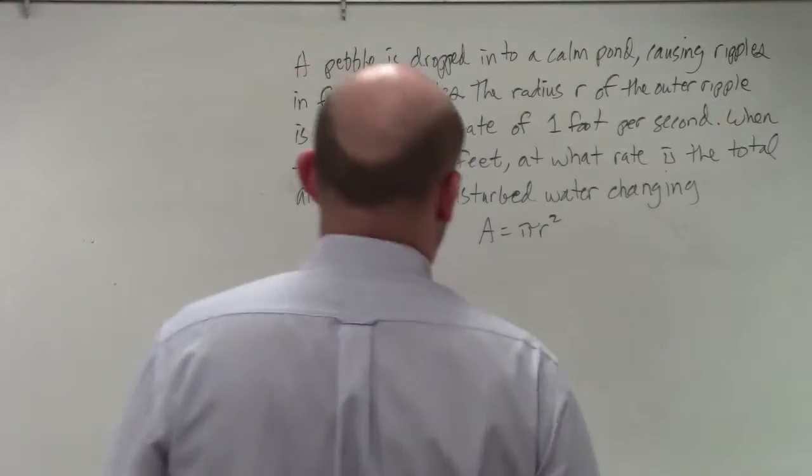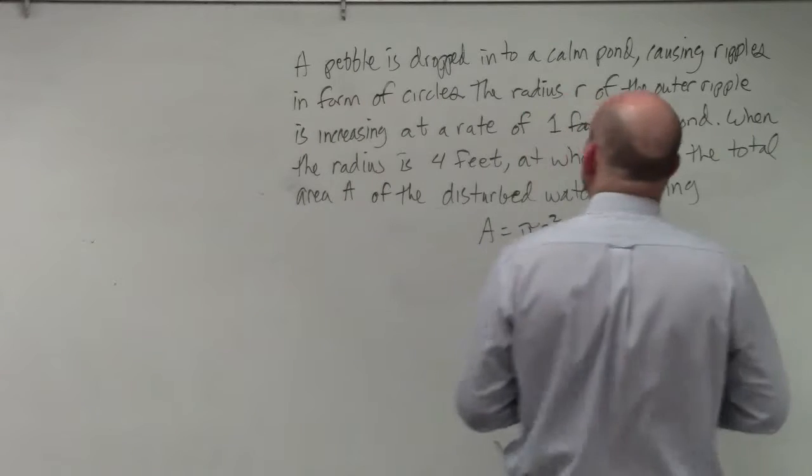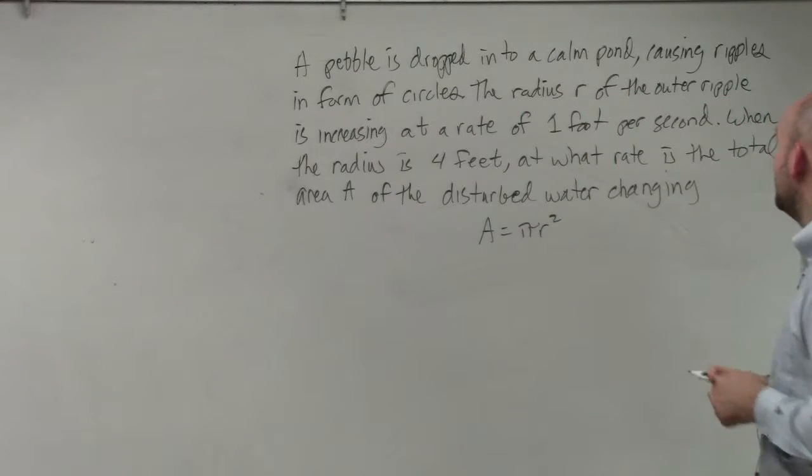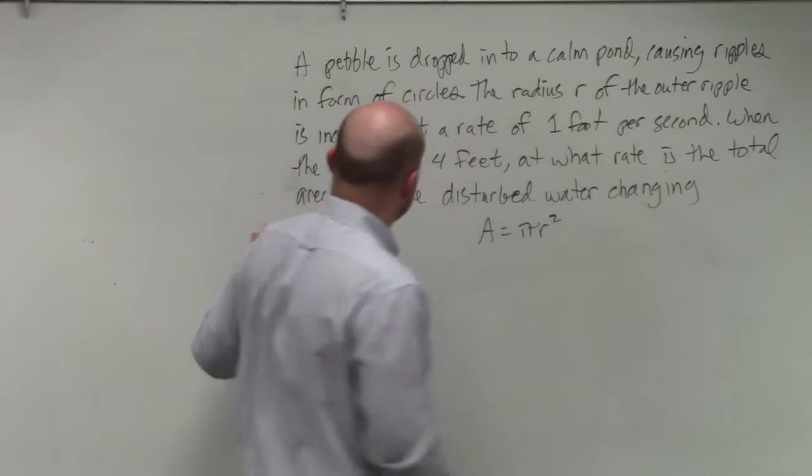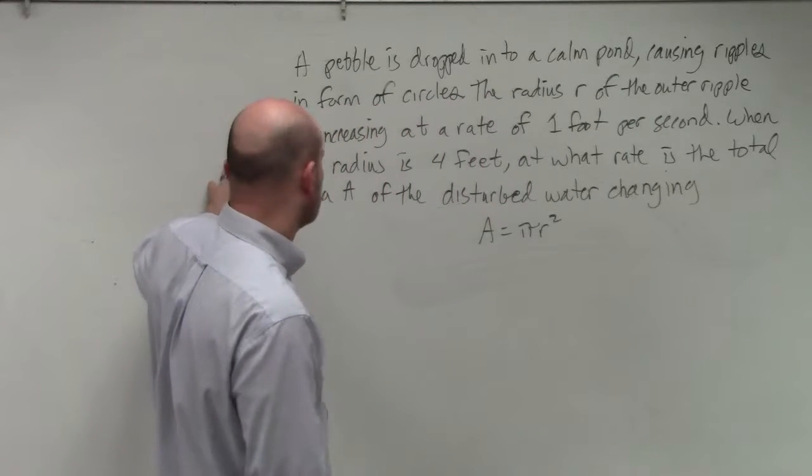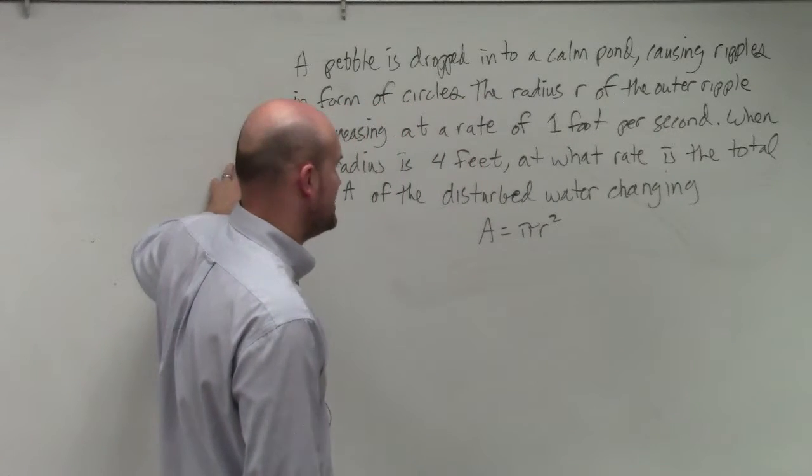All right, so a pebble is dropped into a calm pool, causing ripples to form in circles. The radius R of the outer ripple is increasing at a rate of one foot per second. When the radius is four feet, at what rate is the total area of the disturbed water changing?